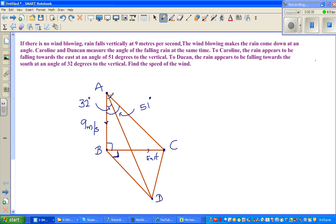I've drawn this figure so AB is showing the rain falling vertically with a speed of 9 meters per second. This is velocity because it has magnitude and direction. The wind blowing makes the rain come down at an angle. This is the rain falling vertically when there's no wind, and if there is wind the rain will move at an angle.